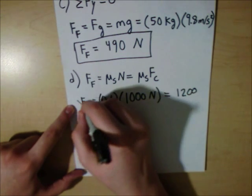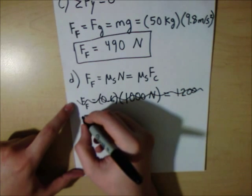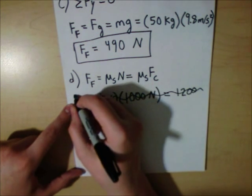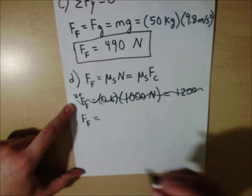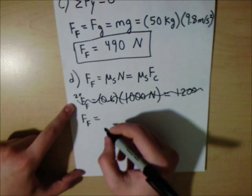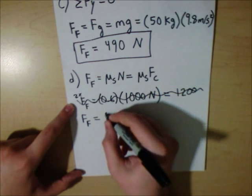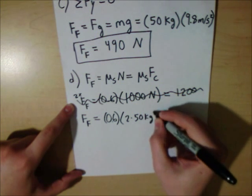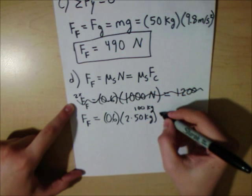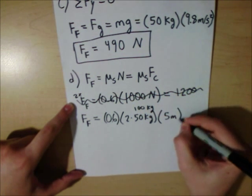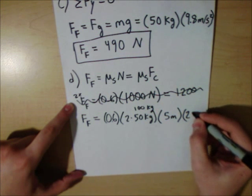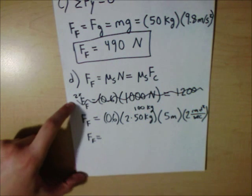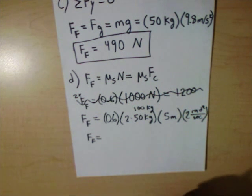Oh sorry, that is not right. It was 2 times that. But I'll show you my work so you don't get confused. Force of friction equals 0.6 times 2 times 50 kilograms, which is twice the mass, and that is 100 kilograms, times 5 meters times 2 radians per second squared. So the force of friction with twice the mass will be 1,200 newtons.